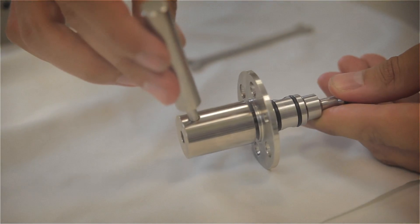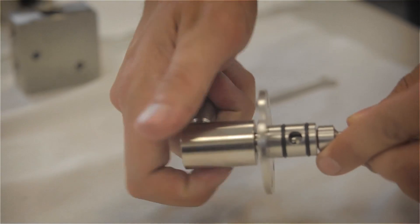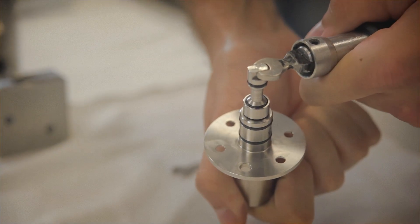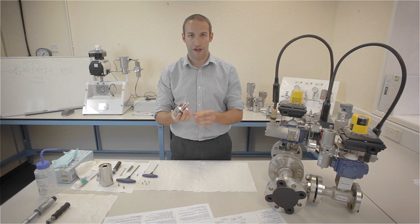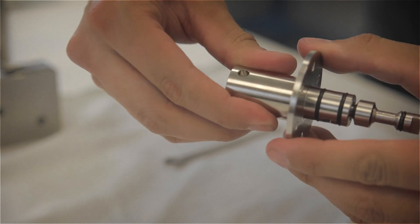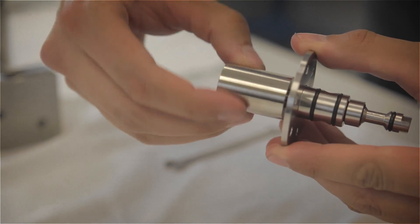We now use a tommy bar and torque wrench, and again, torque to the correct setting as per the maintenance manual. At this stage, it's best to check the valve has adequate movement and that there is no snagging.